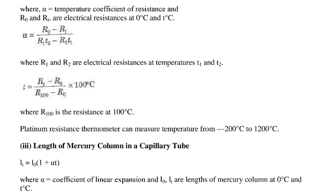Where alpha was the temperature coefficient of resistance and R0 and RT, these are the electrical resistance at 0 degree and T degree. Alpha is R2 minus R1 by R1 T2 minus R2 T1. This R1 and R2, these are the electrical resistances at temperature T1 and T2.